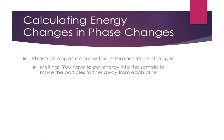We need to be able to calculate energy changes in phase changes, but you have to keep in mind that phase changes occur without temperature changes. If you think back to the particle level animation that we were just looking at, when you put the energy into the sample to melt a solid, the energy goes into moving the particles farther away from each other. So we're changing the potential energy of the sample, but we're not changing the average speed of the particle motion. And so we don't have a temperature change when there's a phase change.